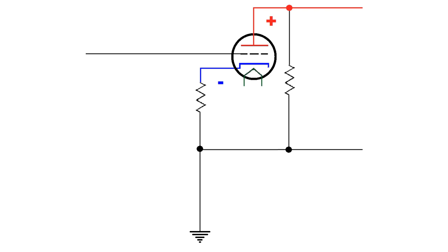We also have a heater, now that's going to boil off electrons in the cathode that are going to be very negatively charged, and these are going to be attracted to the positive charge on the plate.